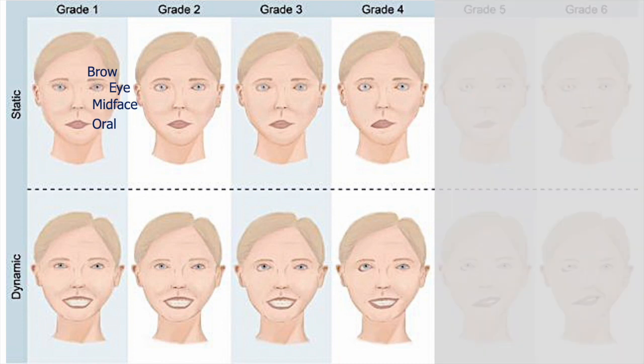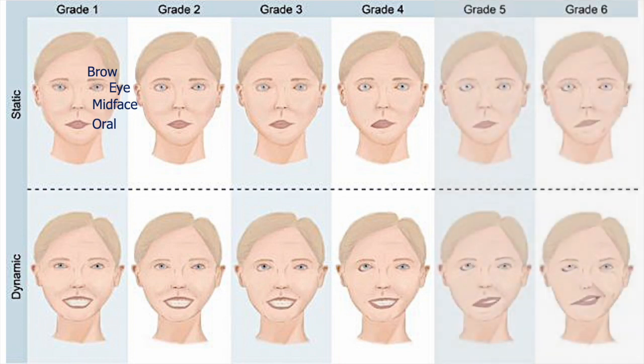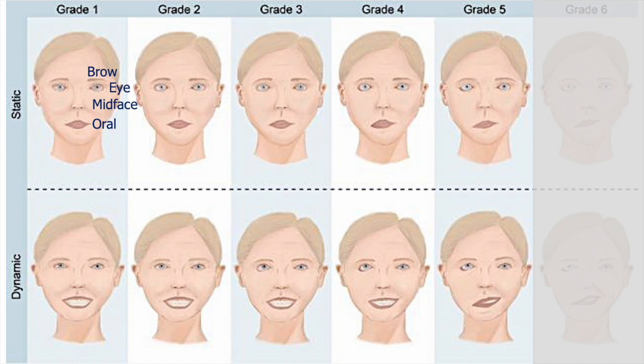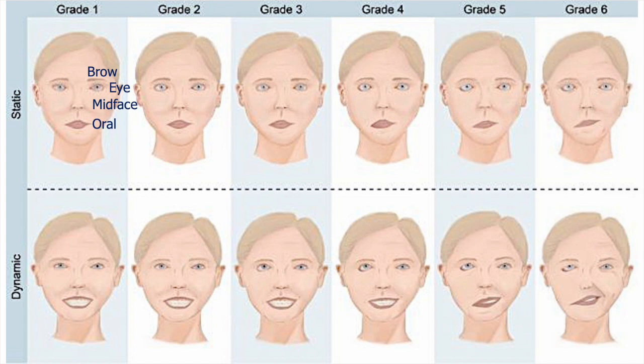Grade 3 is assigned to patients with moderate dysfunction. These patients generally do not display noticeable facial weakness with synkinesis; they maintain complete eye closure and good forehead movement with effort. Grade 4 is assigned to patients with severe dysfunction: obvious facial weakness, incomplete eye closure, no forehead movement, asymmetrical mouth movement, and synkinesis.